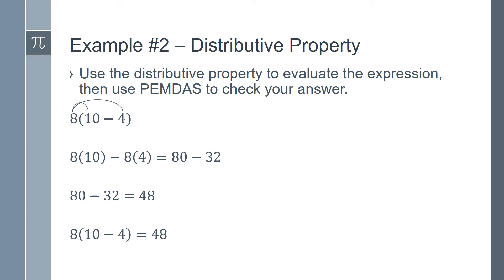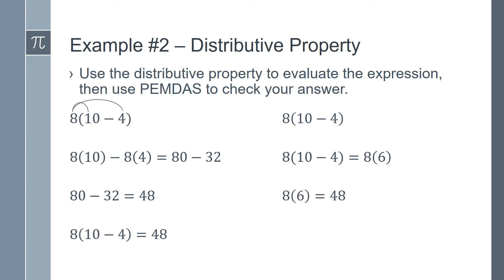Now we can use PEMDAS to check our answer. Start with the same expression and work inside the parentheses first. 10 minus 4 equals 6, so 8 times (10 minus 4) becomes 8 times 6. 8 times 6 is 48. We got the same answer both times, so we know we did it correctly.